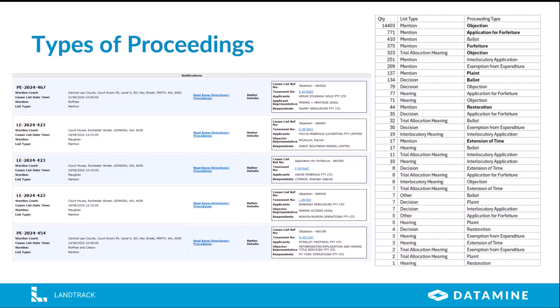Keeping track of court dates for your tenement objections can be a very complex process, and this can be amplified as your portfolio grows. Here we can see some listings on Mineral Titles Online to the left, which can be retrieved using an inquiry or an RSS feed. There are many different types of proceedings including objections, application forfeiture, ballots, interlocutory applications, exemption from expenditure and plaints, although the vast majority are objections.